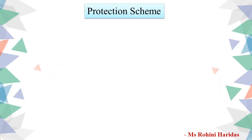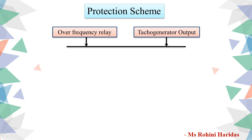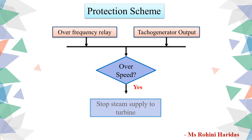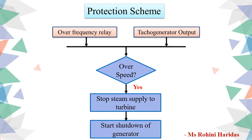Now let us see the protection scheme. As discussed previously, overspeeding can be detected either by using the overfrequency relay or by monitoring the output of the tachogenerator. We will take the input from the tachogenerator and determine whether there is an overspeed or not. If there is an overspeed, then stop steam supply to the turbine and start shutdown of the generator. This is the logic behind the protection against overspeed.